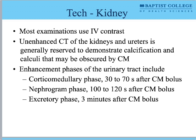If we need to evaluate the kidneys for disease or cancer, we'll use different phases of contrast. The kidneys have a corticomedullary phase about 30 to 70 seconds after contrast injection where we see contrast coming into the renal arteries. Then a nephrogram phase where the kidneys are lighting up like light bulbs. Then an excretory phase where contrast drains out of the kidneys down the ureters into the bladder. The phasing of contrast is directly tied to how quickly the kidneys function to excrete contrast from the body.